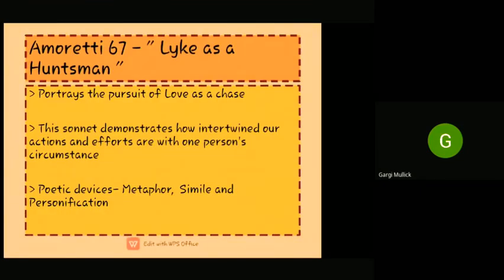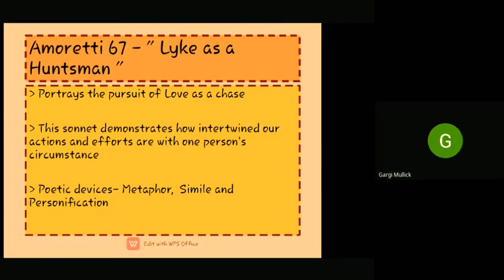Then we have Amoretti Sonnet 67, 'Like as a Huntsman.' The summary of Sonnet 67 is: it begins with a huntsman in pursuit of his game. His prey, a deer, has gotten away from him. He is tired of spending all the time hunting this deer, and so he sits down in the shade to rest with his dogs and decides to give up his hunt. But then the deer comes back from the way it had gone to drink from the nearby stream.